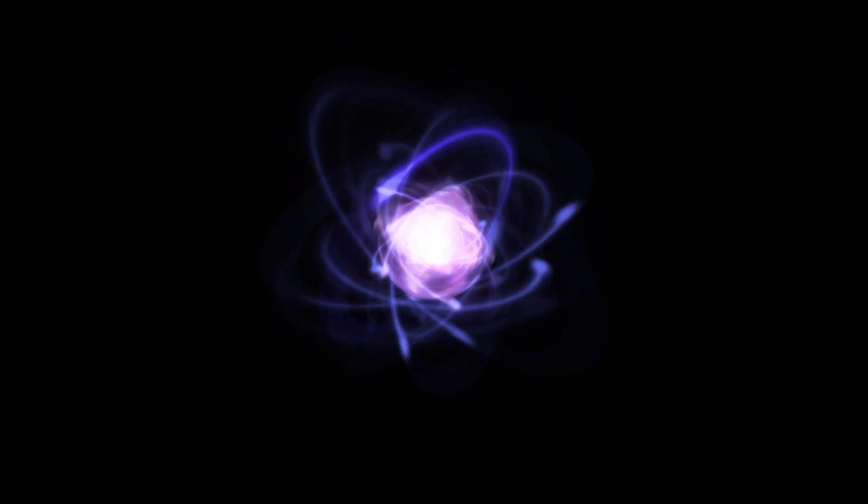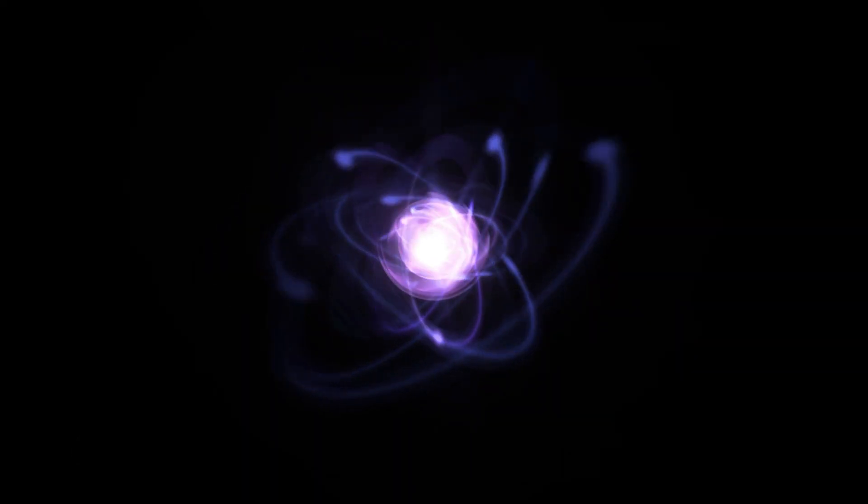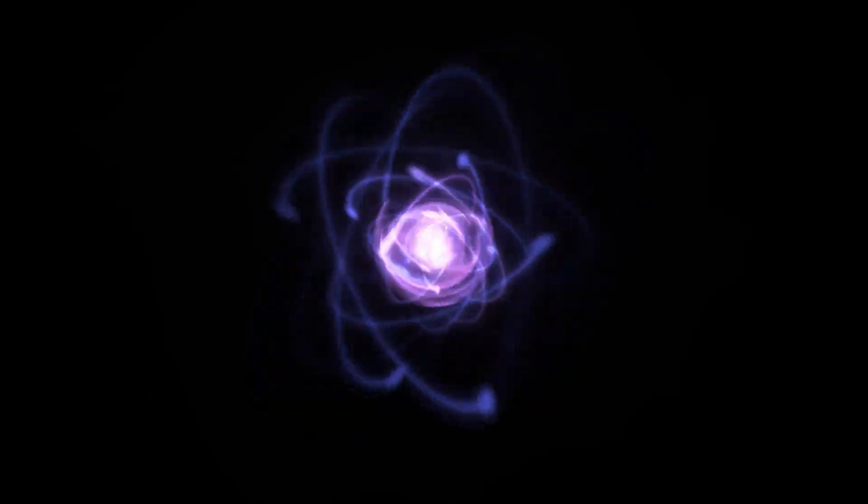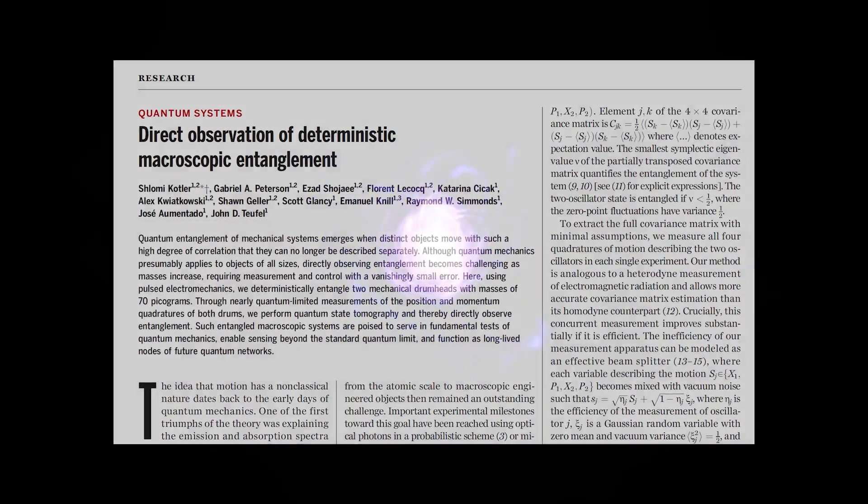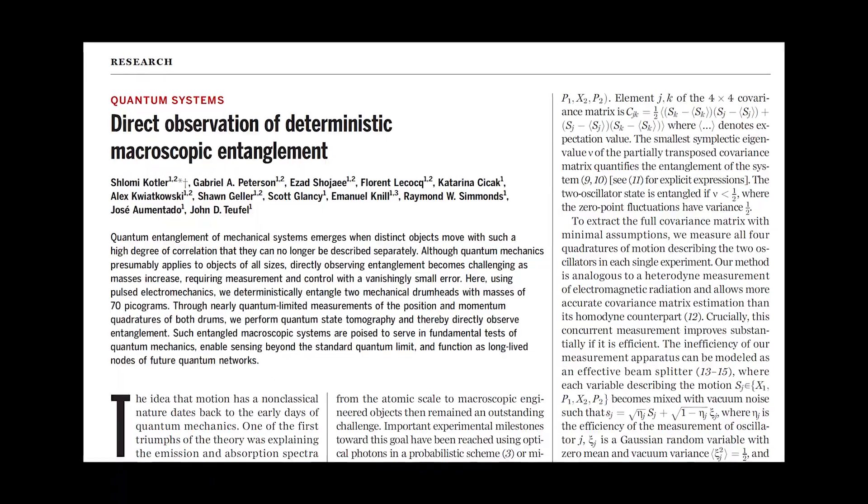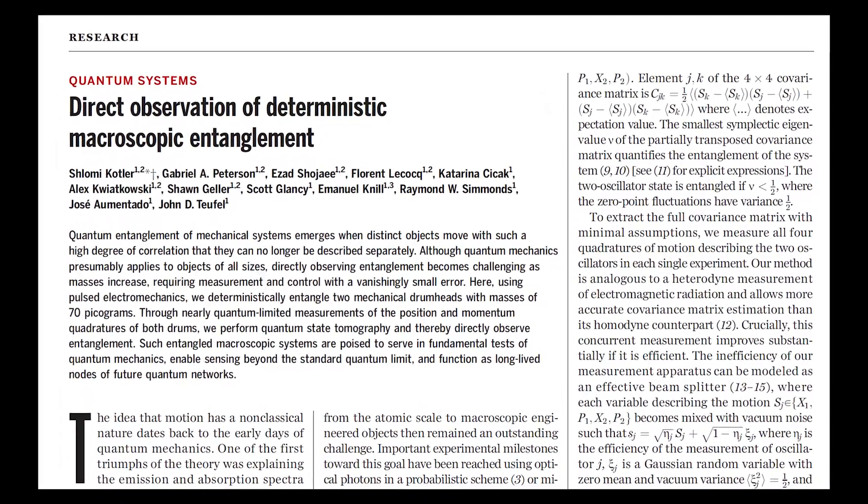Normally, quantum entanglement occurs between two atoms. Large objects cannot be entangled because they house too much thermal noise and interactions between atoms, which prohibits the formation of an entangled state.